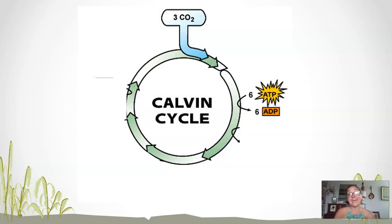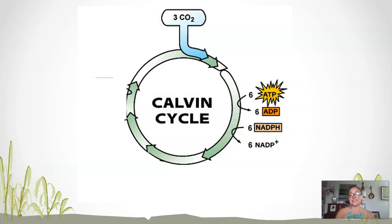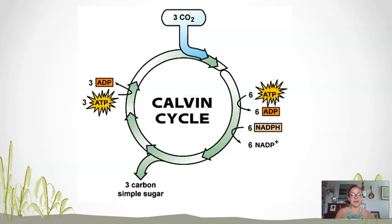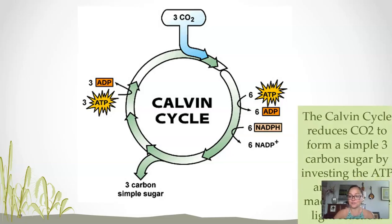Phase two is the reduction phase, where we invest energy from ATP as well as the electrons and hydrogens from NADPH, and out comes G3P — a simple three-carbon sugar. Then we have the regeneration phase, which brings us back to the start of the cycle to begin all over again.